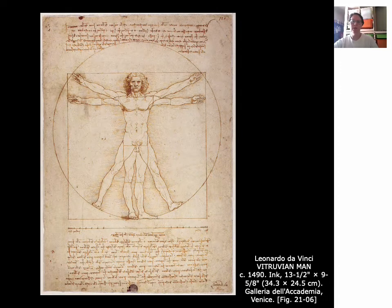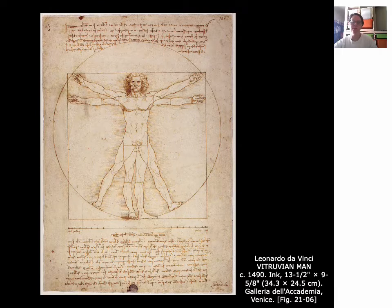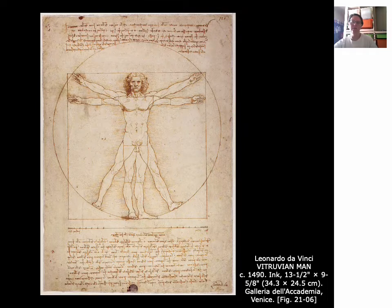This is da Vinci's Vitruvian Man. He drew it after reading a book from the philosophies of an ancient philosopher. The Vitruvian Man links the human body's proportions to basic geometric shapes like the square and the circle — the humanist idea that man was created by God, and that nature is reflected in the harmony of mathematics. Therefore, man is a creation of logic and reasoning.